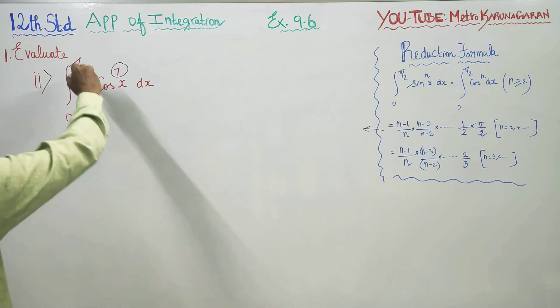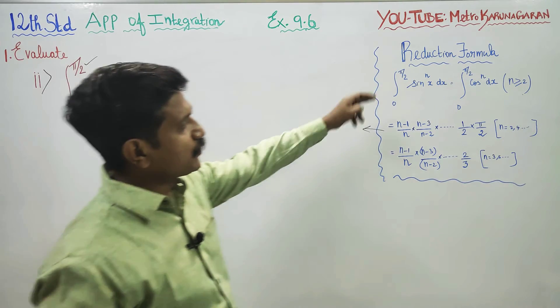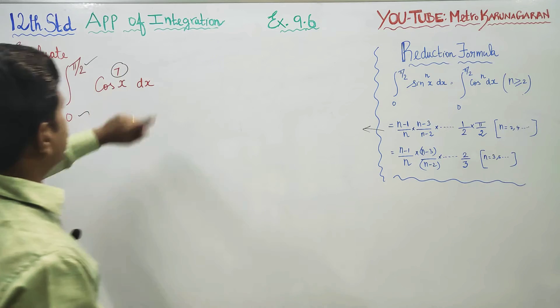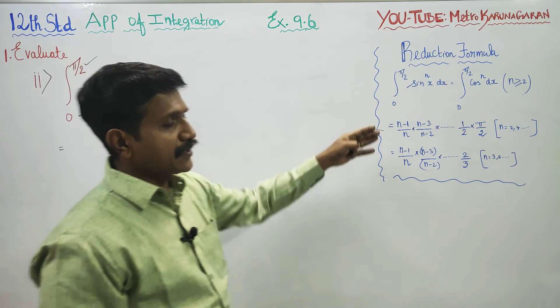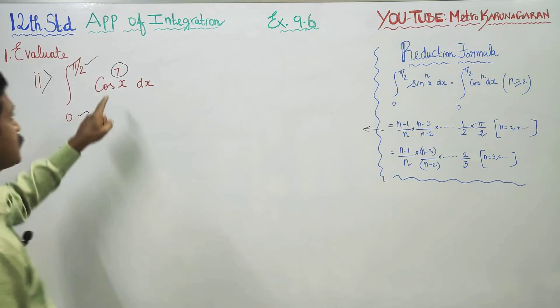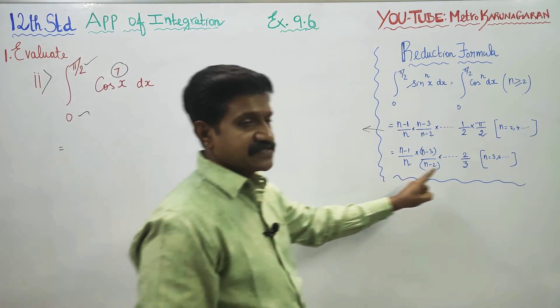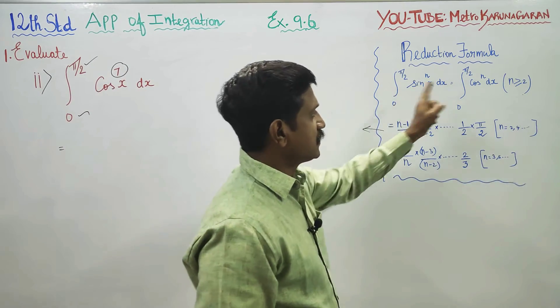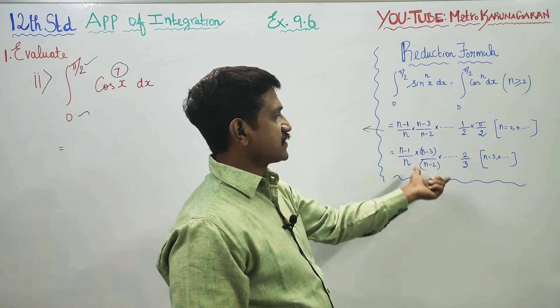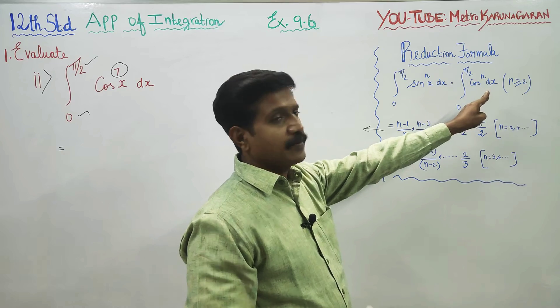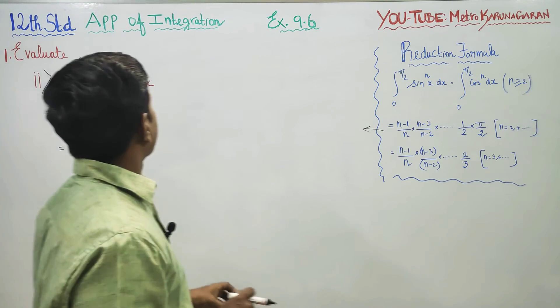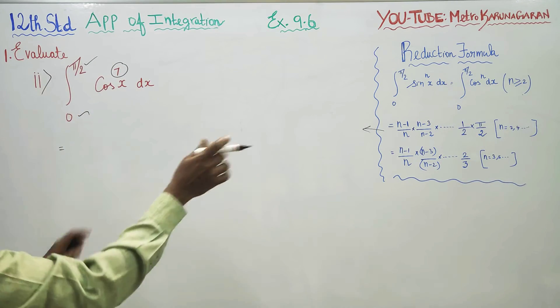First, check the limits - the formula can be applied if it is 0 to π/2. Check what power you have. The formula applies when you have an odd number or even number. This is an odd number, therefore we use the second stage formula. All formulas are applicable when n is greater than or equal to 2.